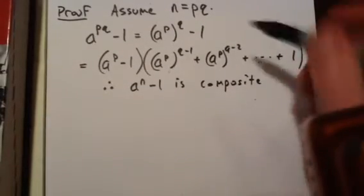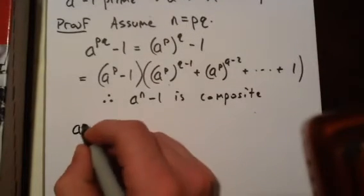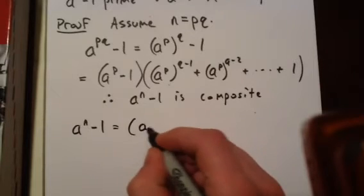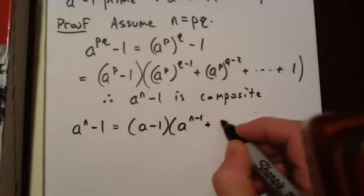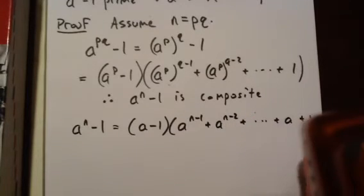Now let's go ahead and show that a has to be 2. So we're going to just consider a to the n minus 1 and do a similar sort of thing. This is equal to a minus 1 times a to the n minus 1 plus a to the n minus 2 plus a plus 1.